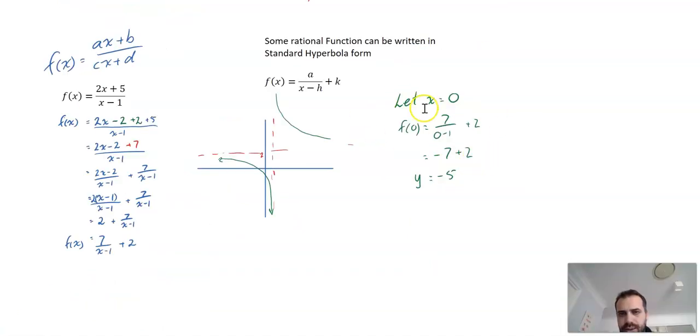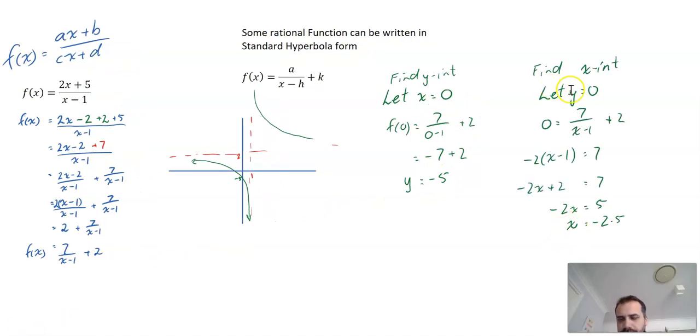Finding my y-intercept, let x equal 0 and y will equal negative 5. Found my x intercept by letting y equal 0, negative 2.5.